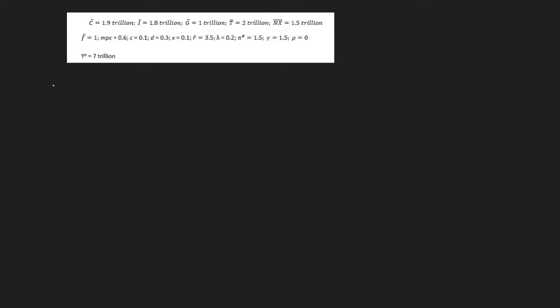Let's start with the IS curve. Part A was asking you to solve out for the IS curve. We know the IS curve is Y equals 1 over 1 minus MPC times C bar plus I bar plus G bar plus NX bar minus MPC times T bar minus D times F bar minus C plus D plus X all over 1 minus MPC, that whole thing, times R.